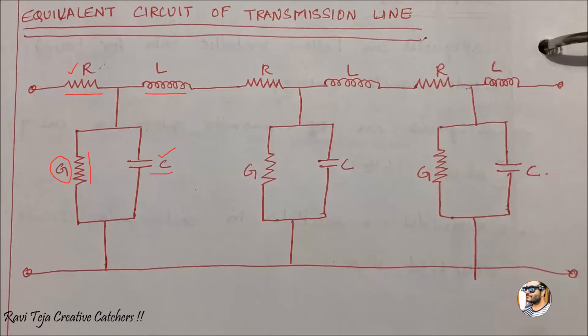These four are the primary constants. Using these four primary constants, we are going to draw an equivalent circuit. An equivalent circuit of a transmission line always consists of four primary constants: resistance, inductance, conductance, as well as capacitance.